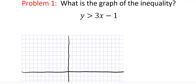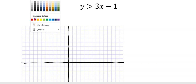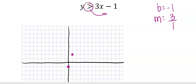So let's try the first one. What's the graph of the inequality? Most of them are going to look like lines, but not all. The first one is a line. We're going to graph it just like we would if we were graphing a slope-intercept line. So your b is negative one, and your slope is three over one.